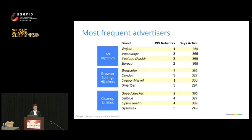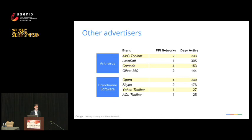We also see some potentially legitimate players participating. In terms of antivirus, we see AVG Toolbar, Lavasoft, Commodore, and Kehoe buying installs on users' machines. However, all of these AV industry players have their own affiliate programs, so third parties may be distributing their software on their behalf — it's unclear whether the antivirus industry itself is participating. We also see brand name software like Opera, Skype, Yahoo, and AOL. Many of these also run affiliate programs, so it becomes very murky whether the brand name itself is buying installs or somebody else.